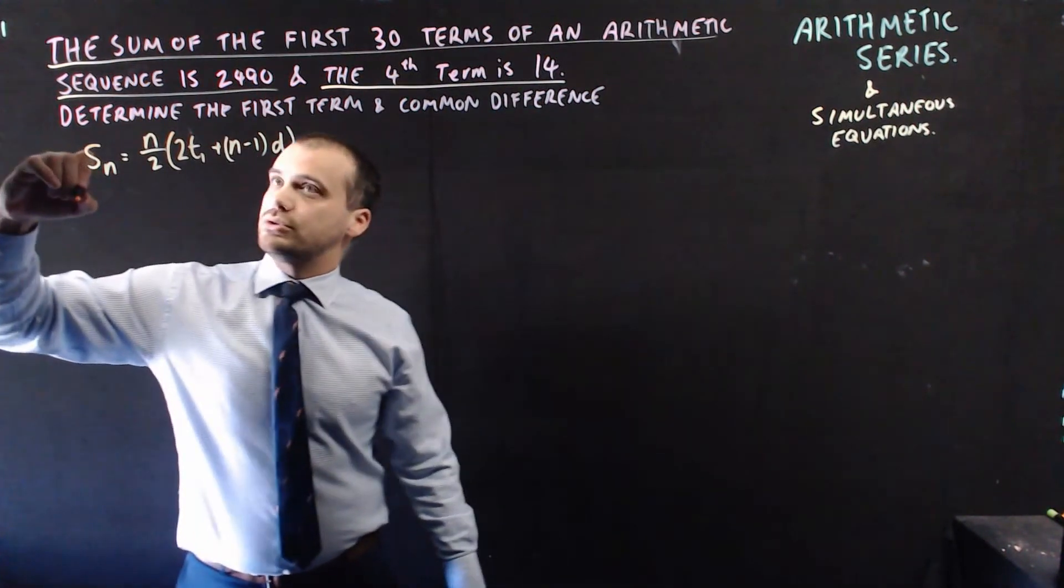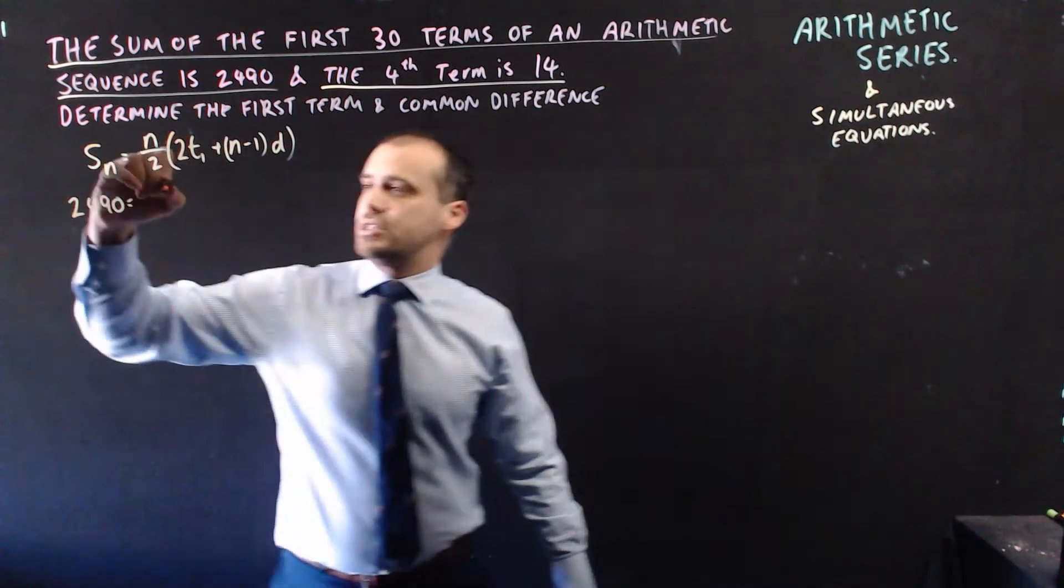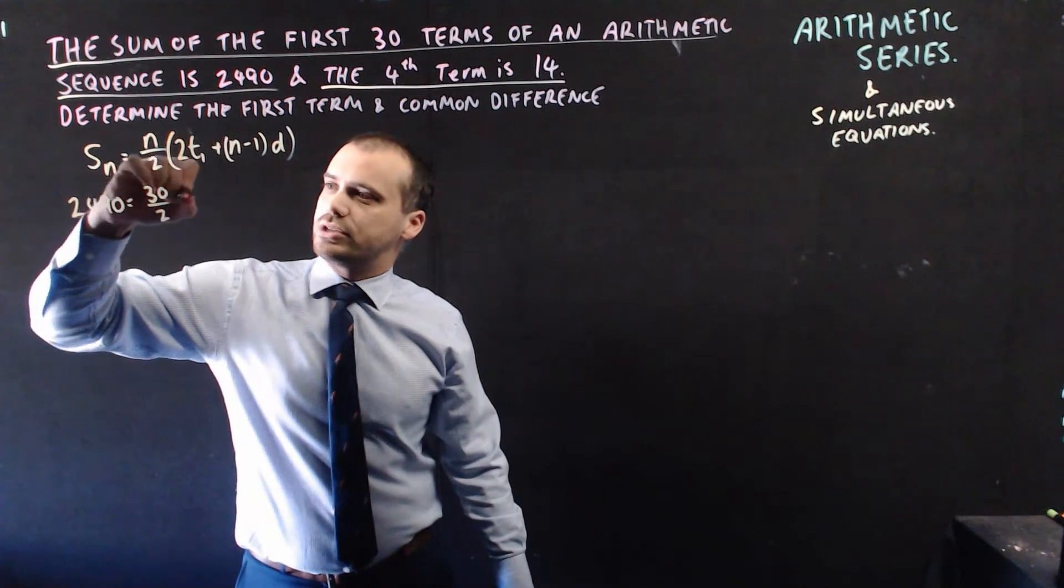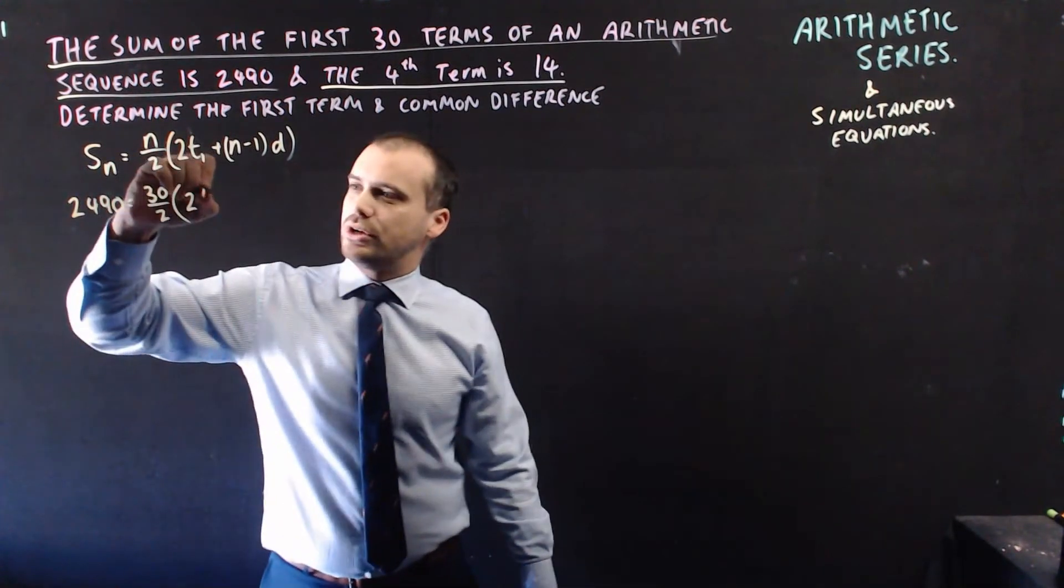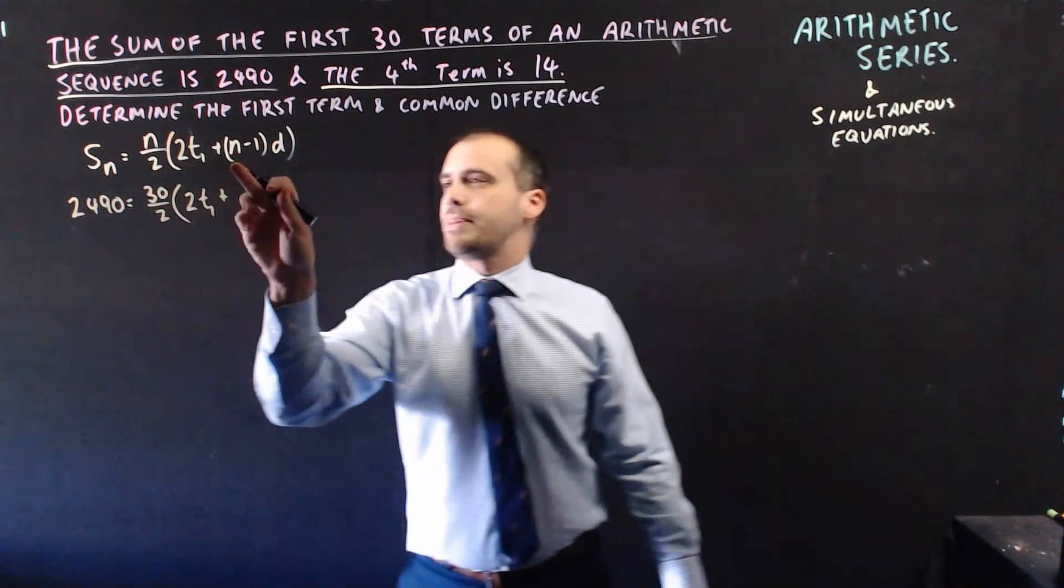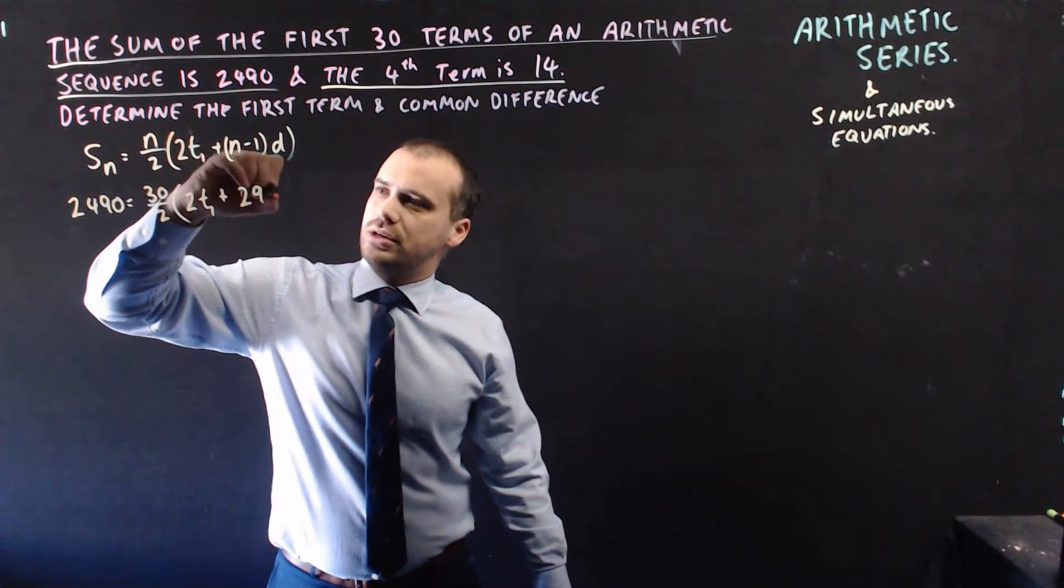So the sum equals 2,490, the sum of the first 30 terms, so 30 divided by 2, 2 times the first term, which we don't know, plus n minus 1. 30 terms, so n minus 1 is 29, d.